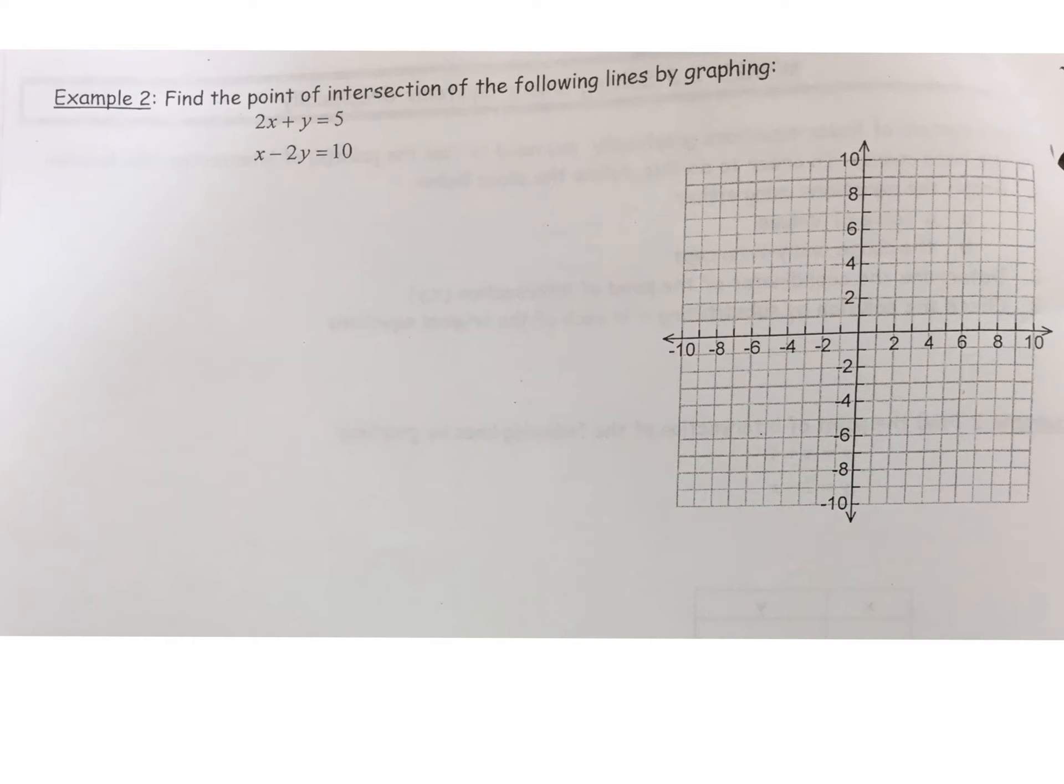Okay, so again, we're looking at solving the linear system by graphing. We're trying to find the point of intersection. Line 1 is 2x plus y equals 5, and line 2 is x minus 2y equals 10.